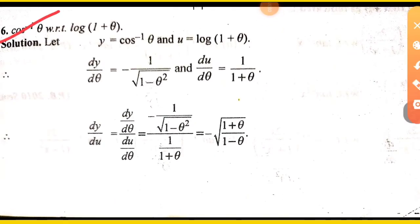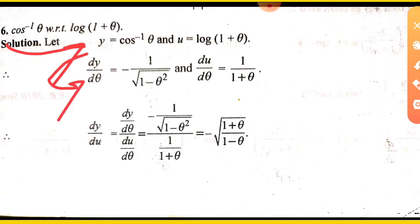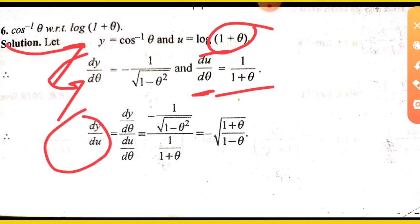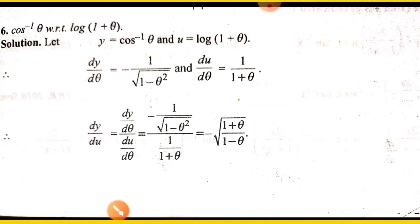Next: differentiate cos inverse theta with respect to log(1 + theta). y is cos inverse theta, and u is log(1 + theta). Find dy upon d theta, which is minus 1 upon root(1 minus theta squared). And du upon d theta is 1 upon (1 + theta), since the derivative of log f(x) equals 1 upon f(x). So dy upon du equals dy upon d theta divided by du upon d theta. Divide it and you can find the answer.